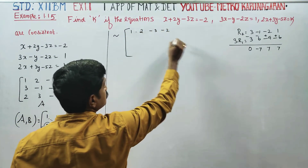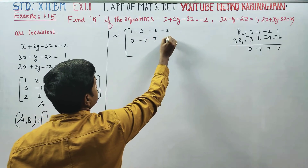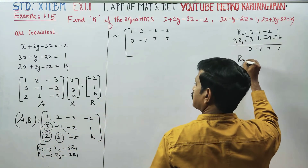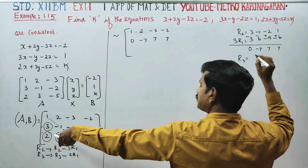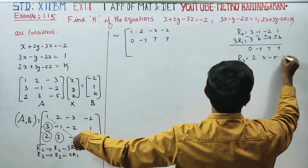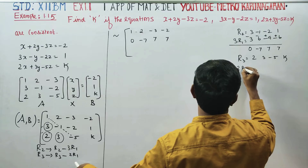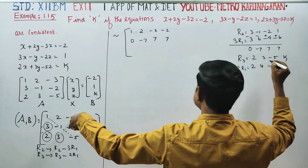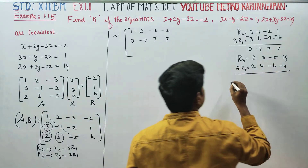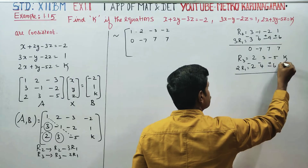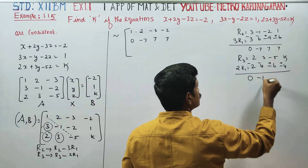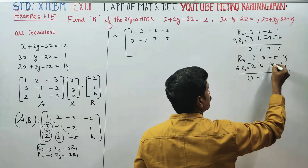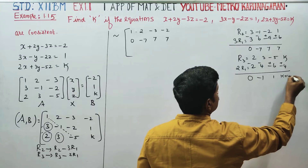After row operations, R2 becomes 0, minus 7, 7, 7. For R3, subtracting 2 times R1: 2 times 1 is 2, 2 times 2 is 4, 2 times minus 3 is minus 6, 2 times minus 2 is minus 4. R3 becomes 0, minus 1, 1, k plus 4.